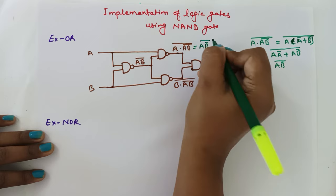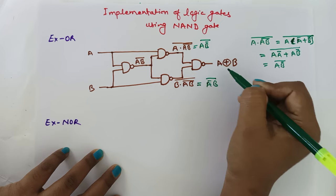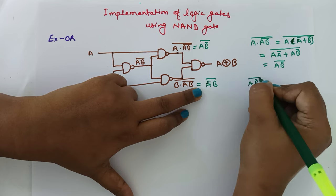So the first term simplifies to AB bar whole bar. Similarly, the second term B dot AB bar whole bar simplifies to A bar·B whole bar. When we give these two inputs to the fourth NAND gate, the output will be AB bar whole bar multiplied by A bar·B whole bar.